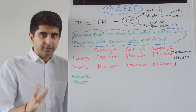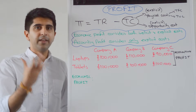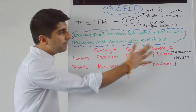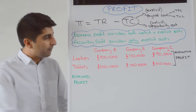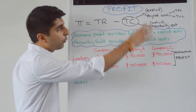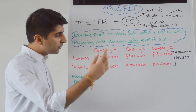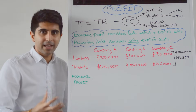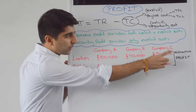Let's understand why that's so important and why economists get to different conclusions than accountants. Let's take three companies: company A, B, and C. All three are currently making laptops and are making these levels of accounting profits — where the opportunity cost has not yet been included. So £100,000 for company A, £110,000 for company B, and £90,000 for company C.